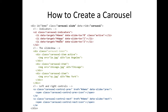For the indicators, we have a ul with class 'carousel-indicators' and three list items. The data-target is 'demo', which is the id, so the target should match the id. Then data-slide-to zero, one, two — zero corresponds to the first image, one to the second, two to the third. Class 'active' means the first image is our default active image.